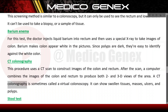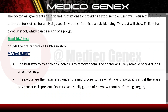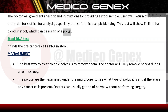CT colonography, sometimes called virtual colonoscopy, can show swollen tissues, masses, ulcers, and polyps. Stool test: the doctor gives the client a test kit and instructions for providing a stool sample, which is returned to the doctor's office for analysis — especially to test for microscopic bleeding. This test will show if the client has blood in stool, which can be a sign of a polyp. Stool DNA test: this finds precancerous cells' DNA in the stool.